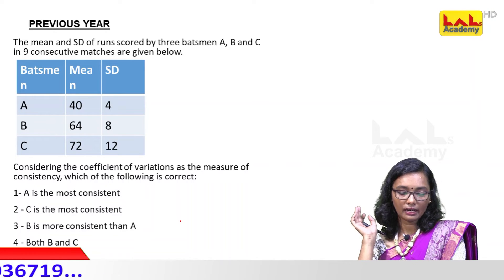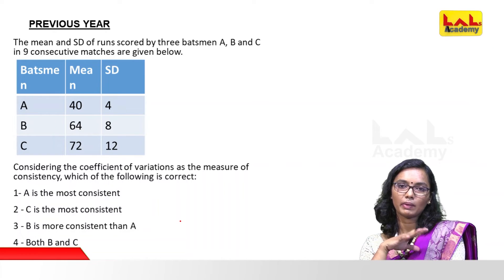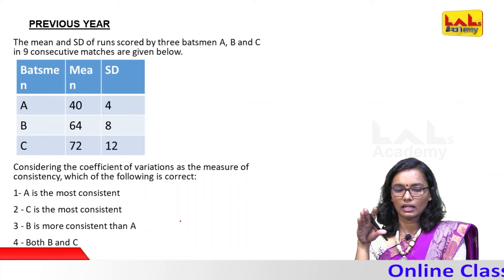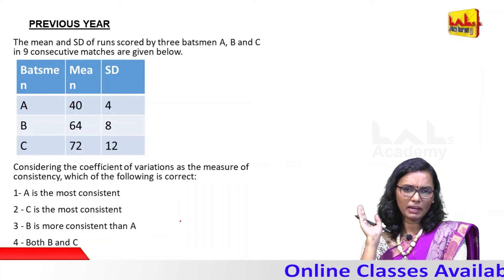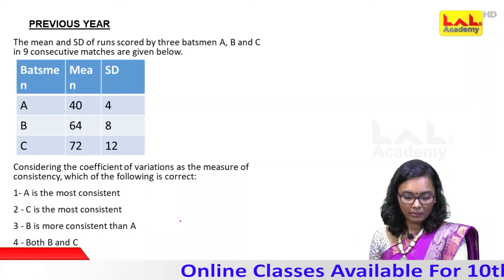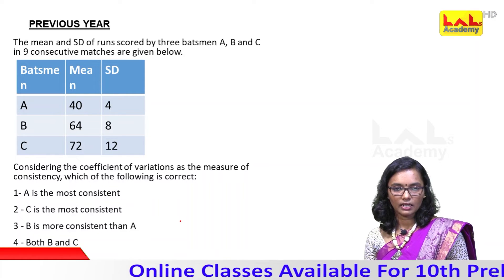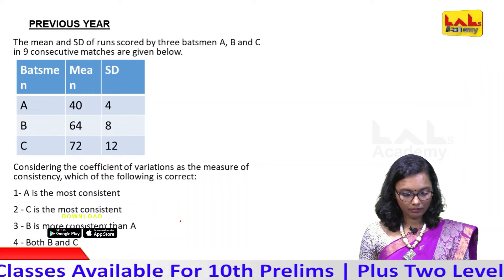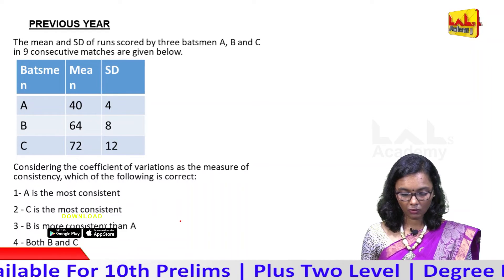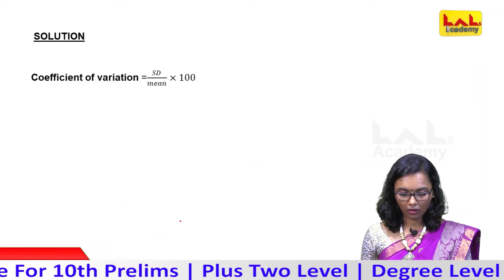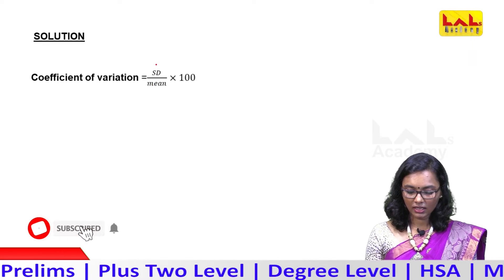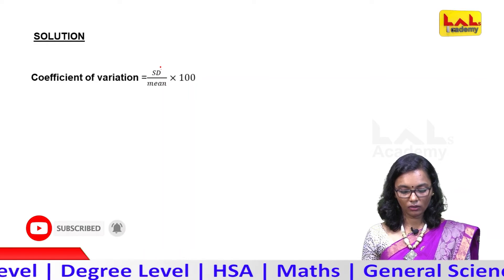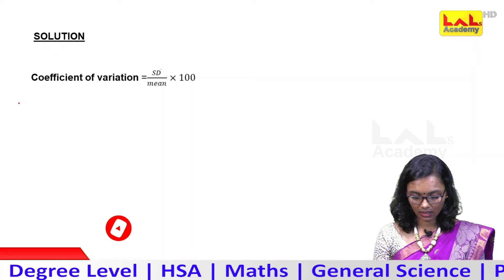So in this case, it is consistent. If you take 10 games, it is not straightforward to identify the most consistent batsman. If we calculate the Coefficient of Variation, the formula for Coefficient of Variation is: standard deviation divided by mean, multiplied by 100.